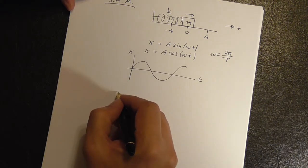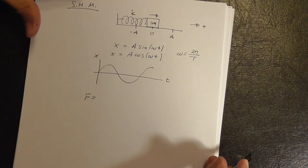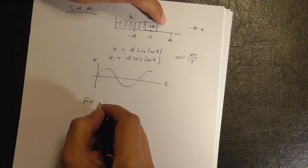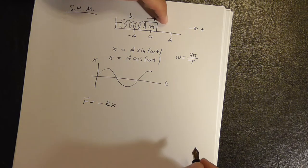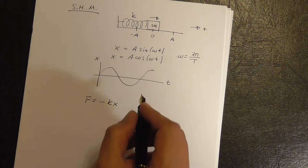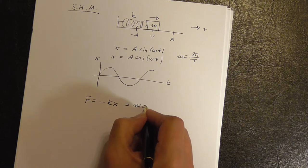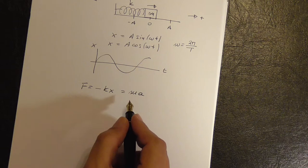Let's look at the force. At any time T, at any position X, you know that there is a restoring force minus KX. This comes from Hooke's law. But this is also equal to mass times acceleration because of Newton's second law.